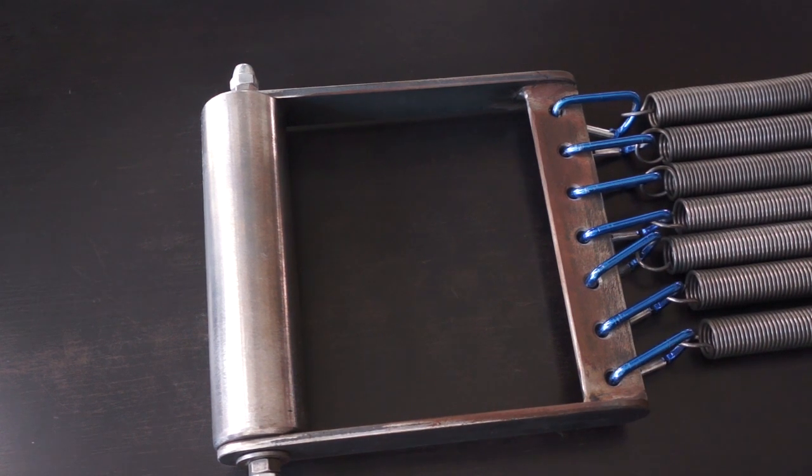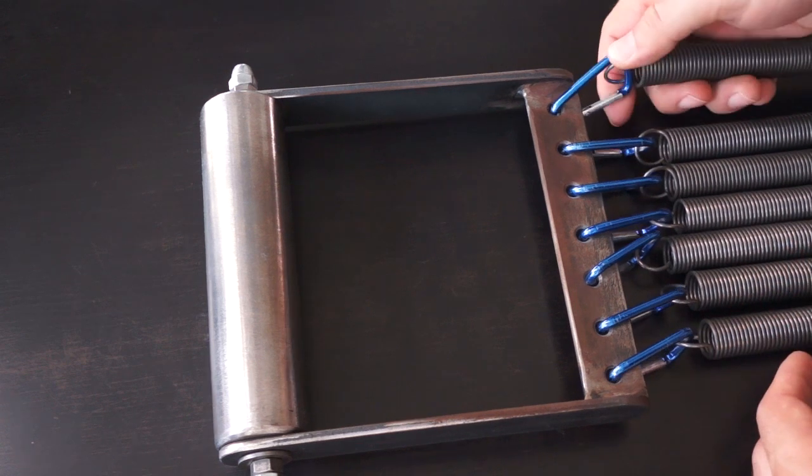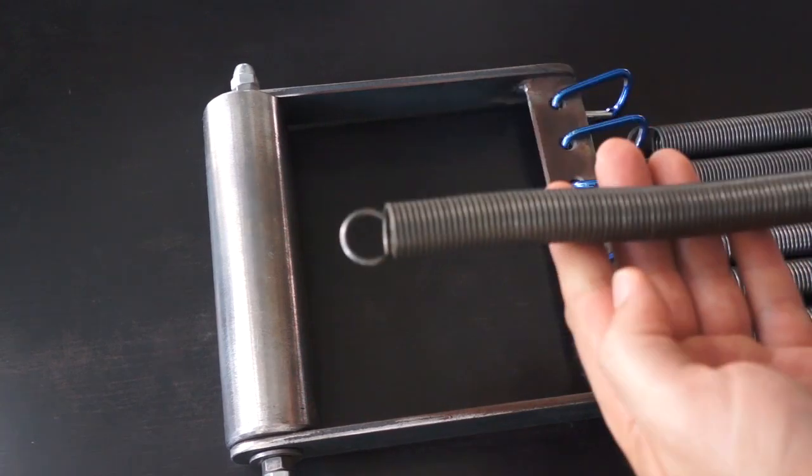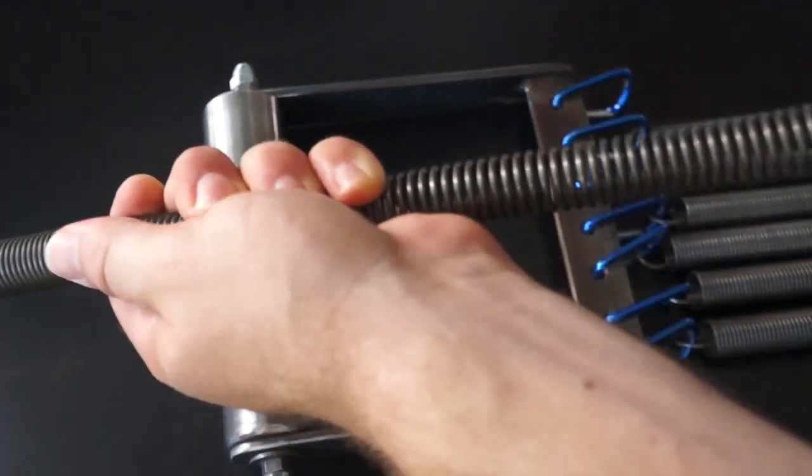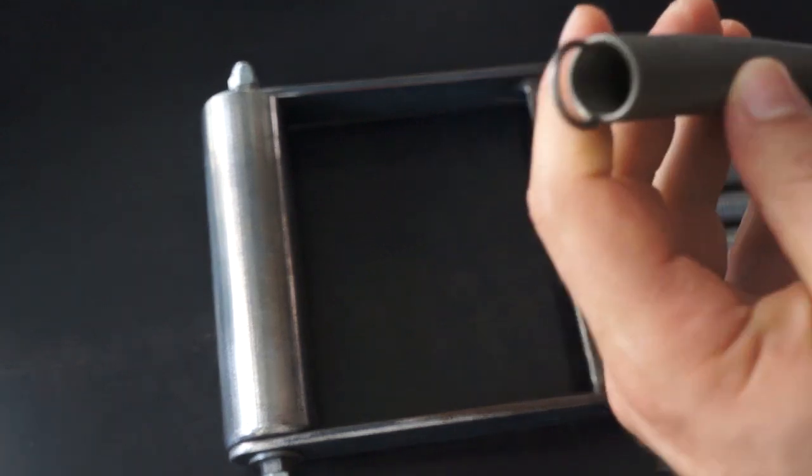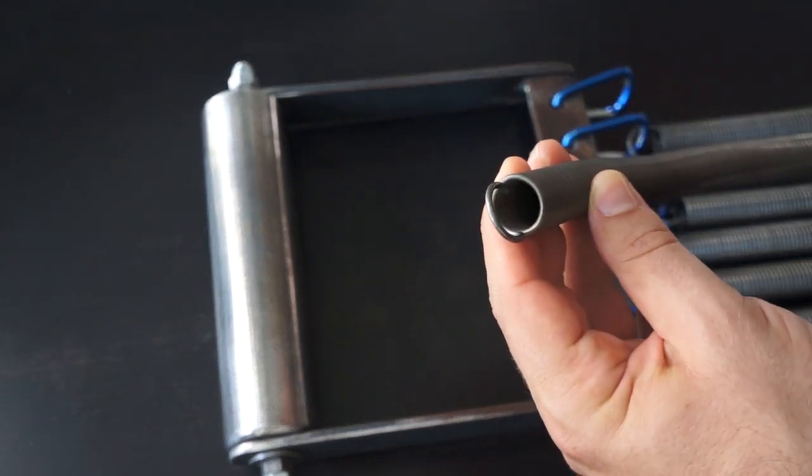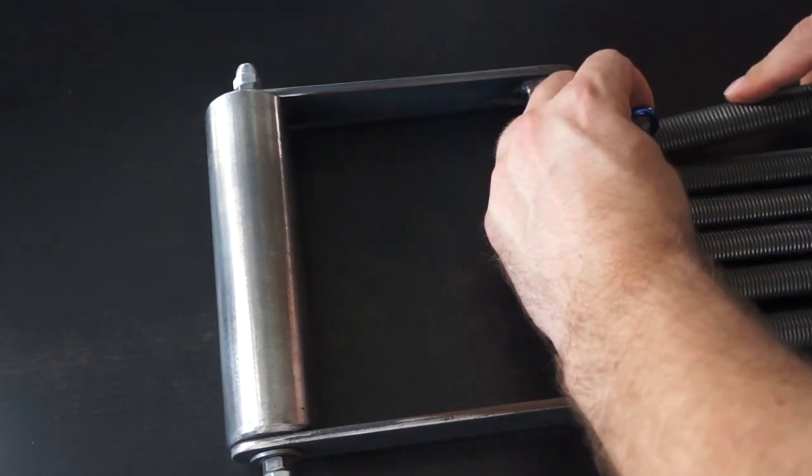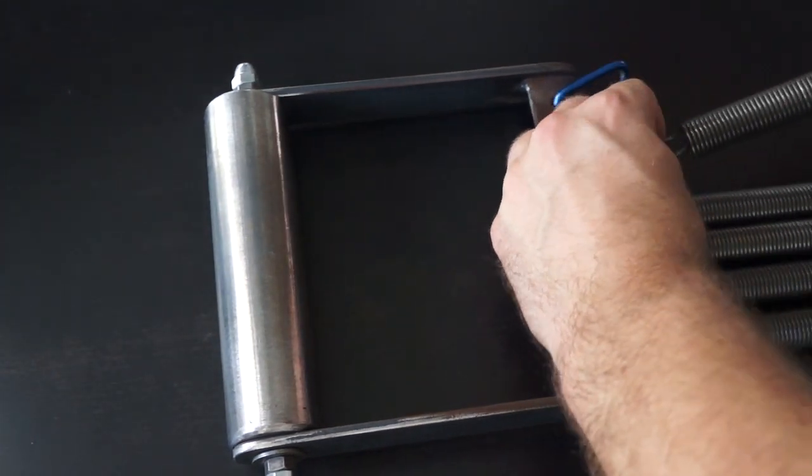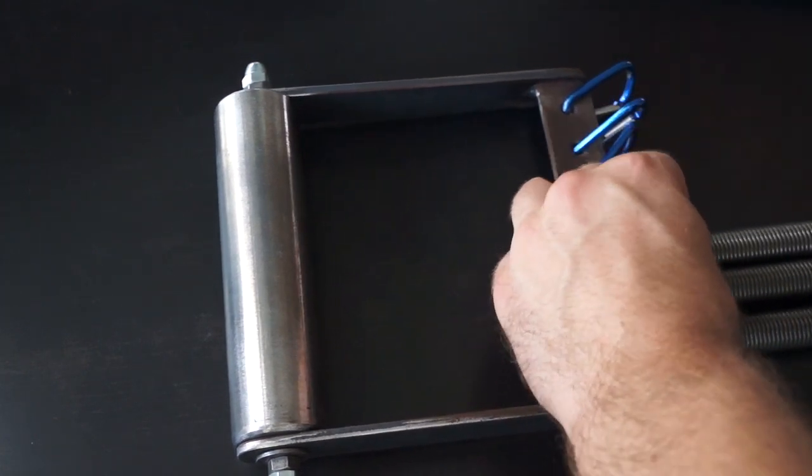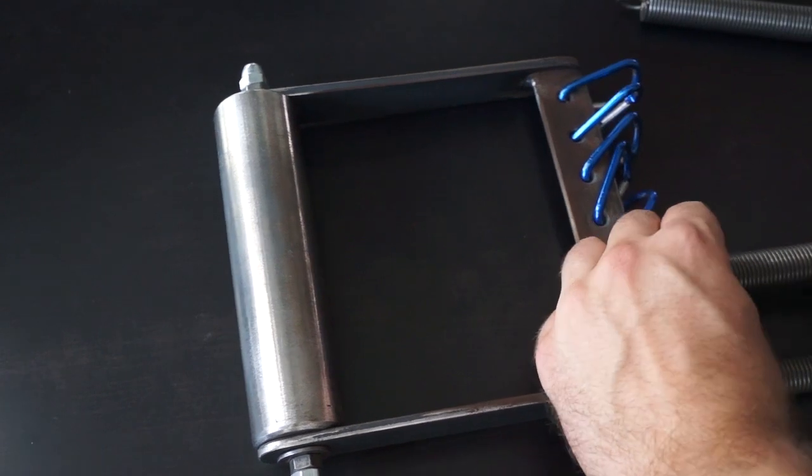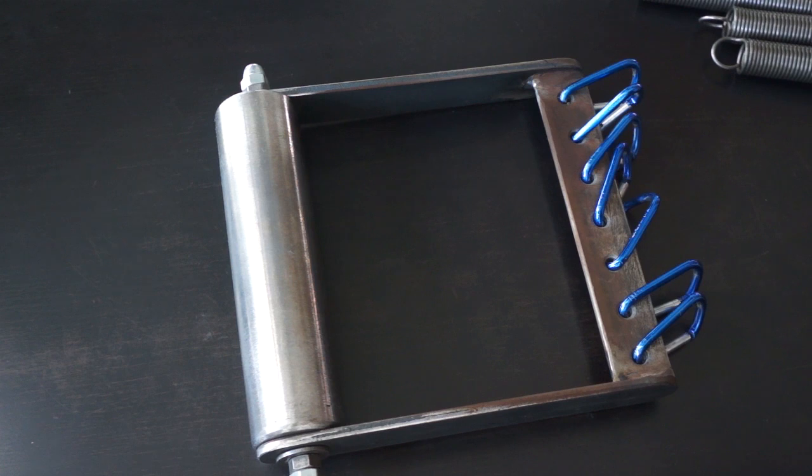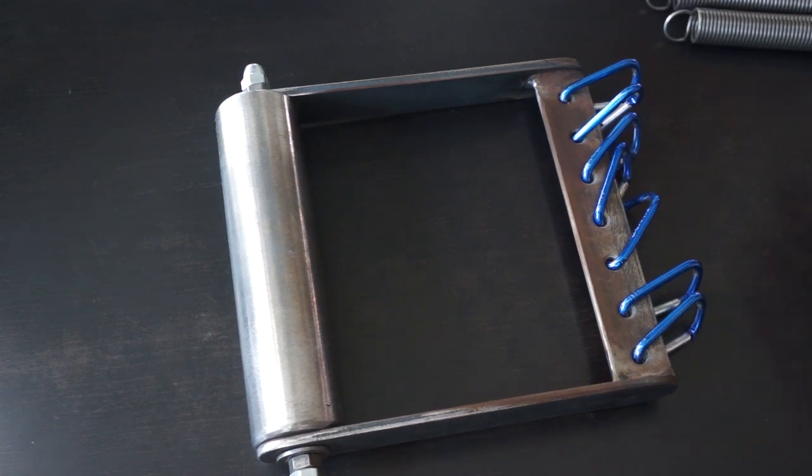Now to the functionality. The carabiners hold the springs - spring 1, spring 2, and so on. I have carabiners because they're easier to change. As you can see, it's super quick to unhook all the springs.